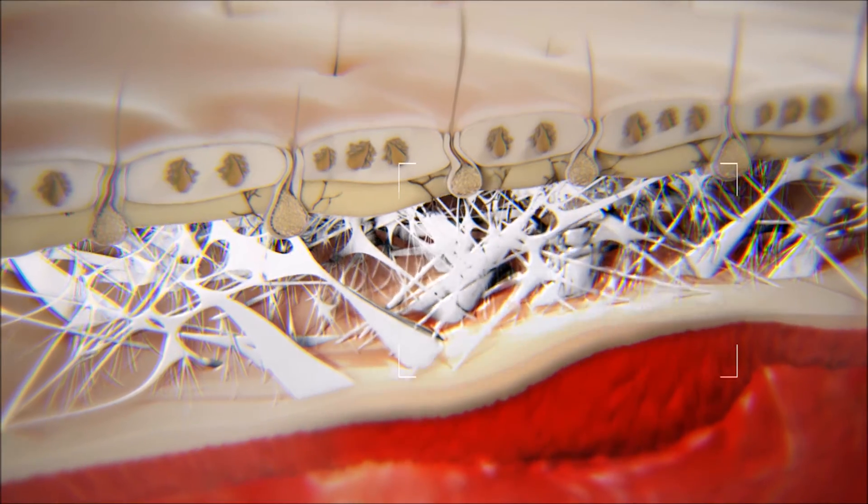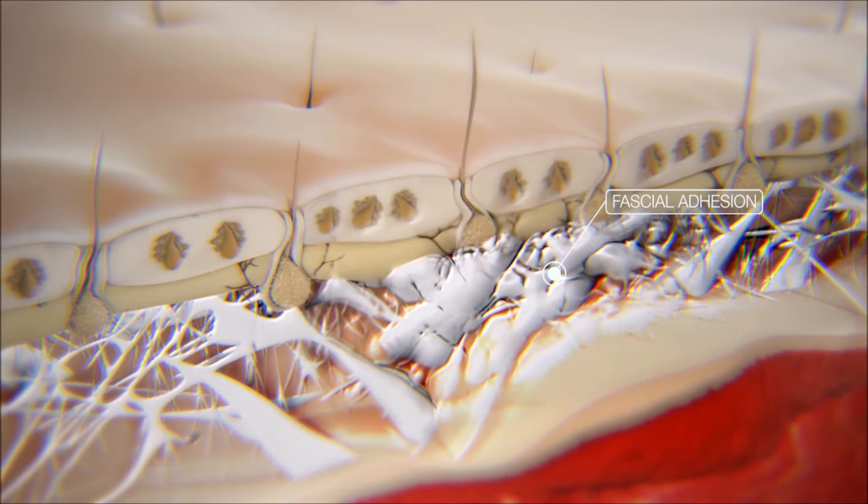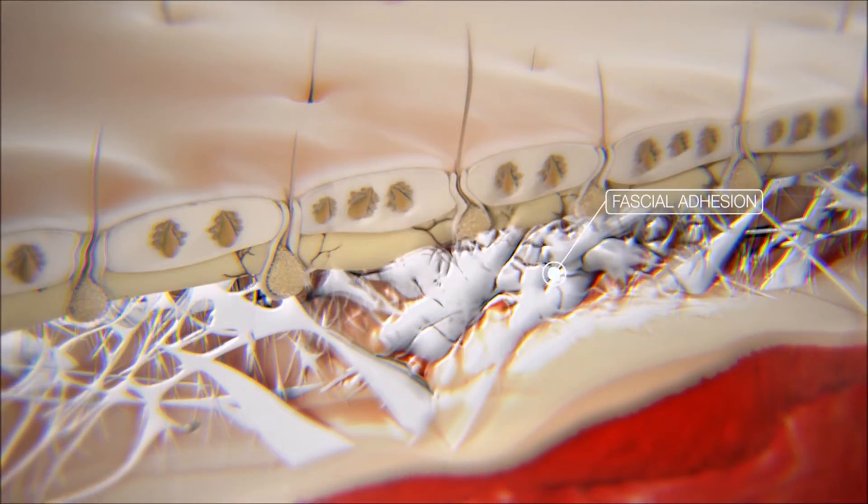The fascia becomes extra dense and fascial adhesions are created. Overproduction of fascial adhesions can affect mobility of corresponding muscles and joints.